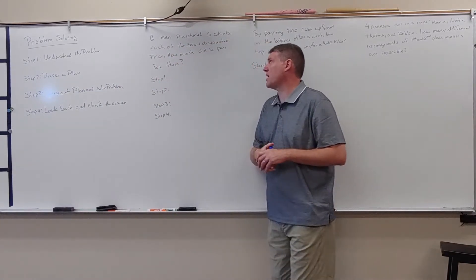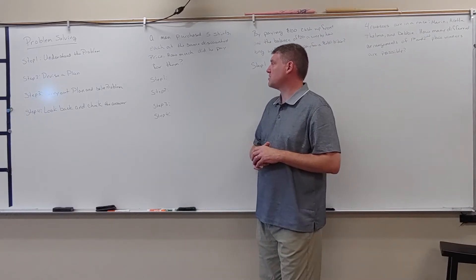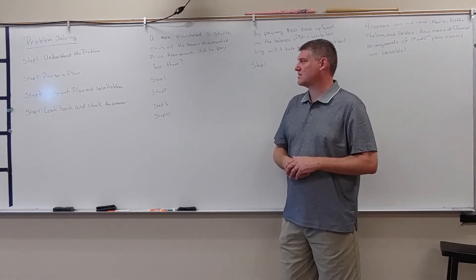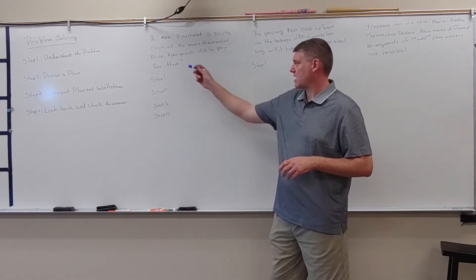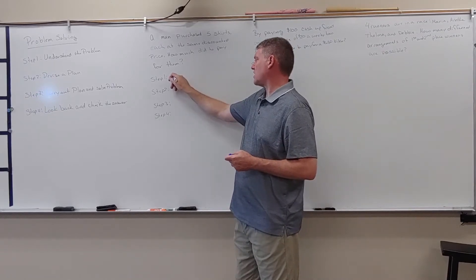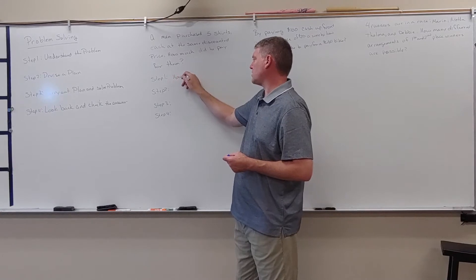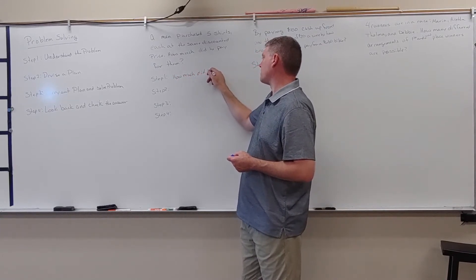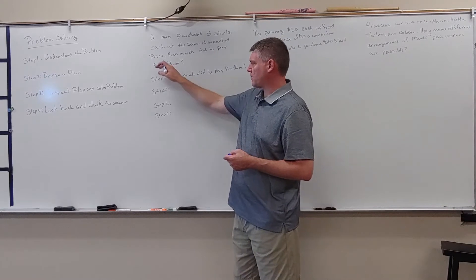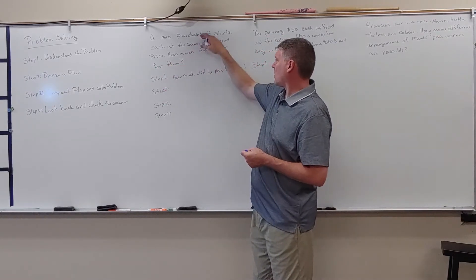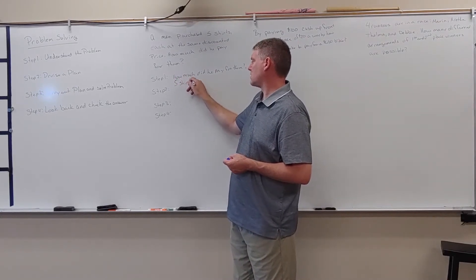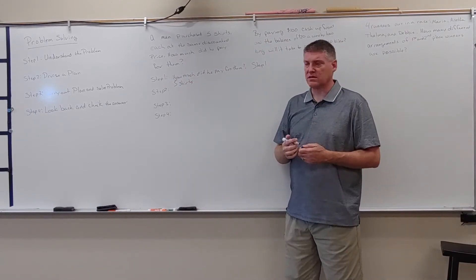So our first example here is a man purchased five shirts, each at the same discounted price. How much did he pay for them? So the first thing is step one. What is it being asked of us? Well, the problem is, how much did he pay for them? So that's kind of our problem here. We just took it straight from there. What other information do we have? That he purchased five shirts. So we know he purchased five shirts, and then we look at the other pieces.